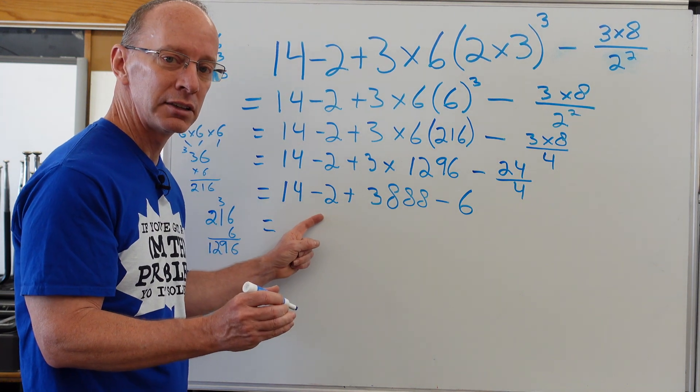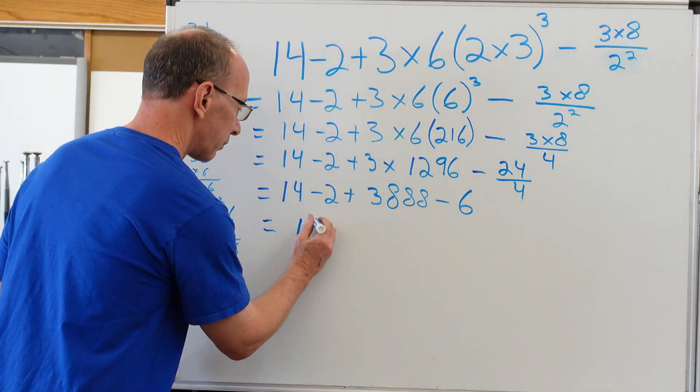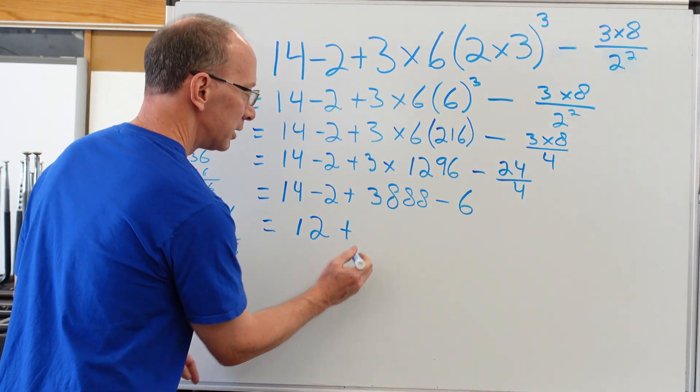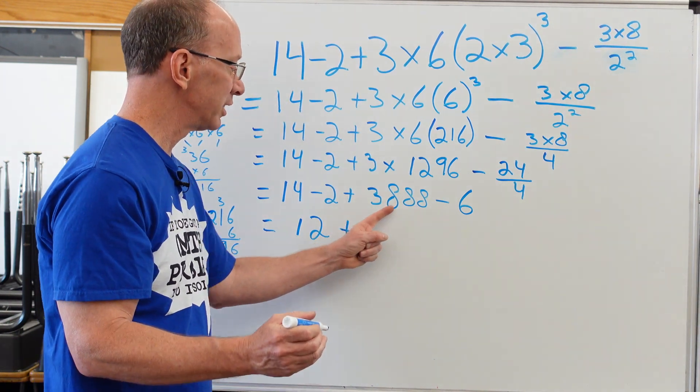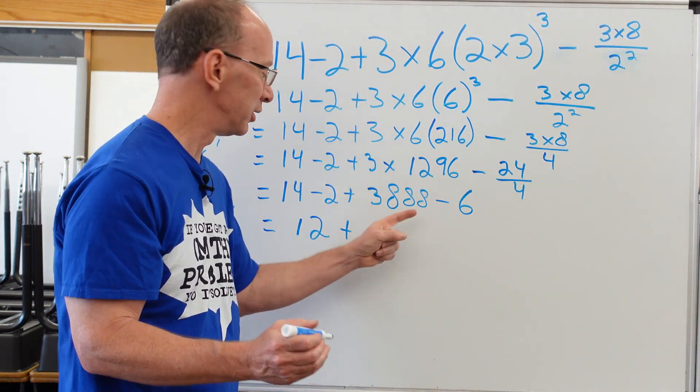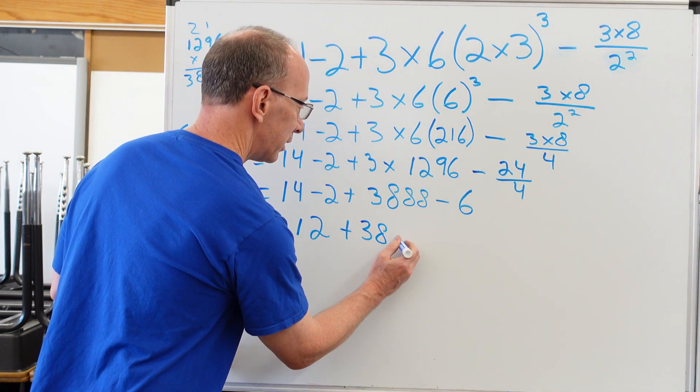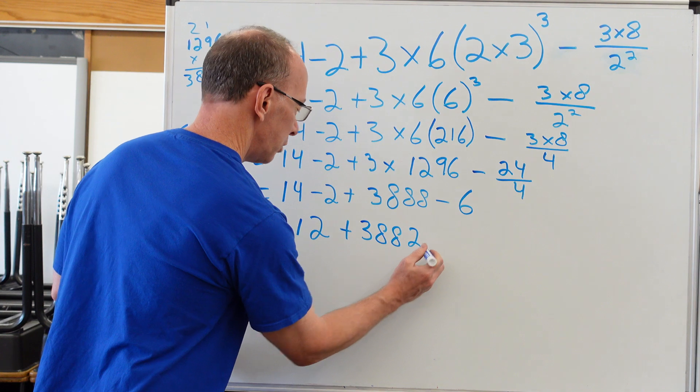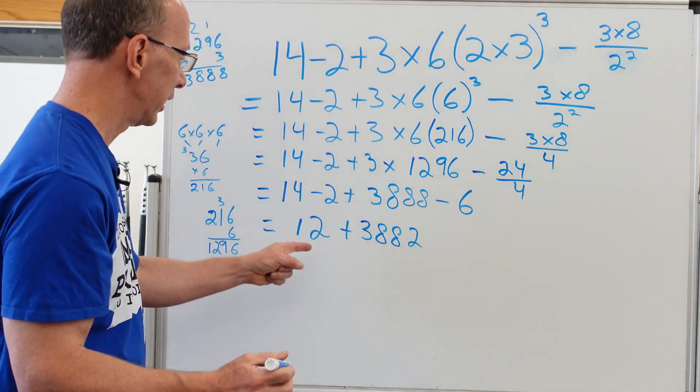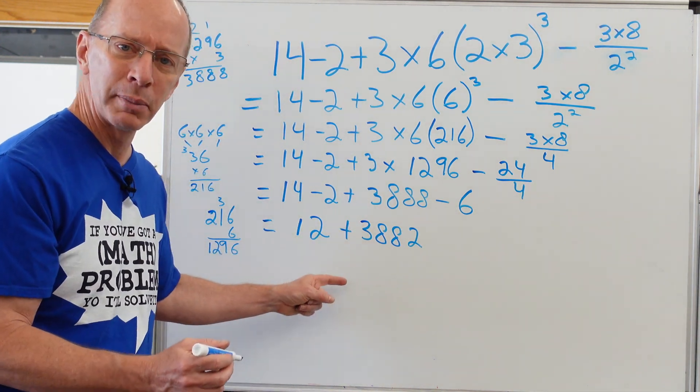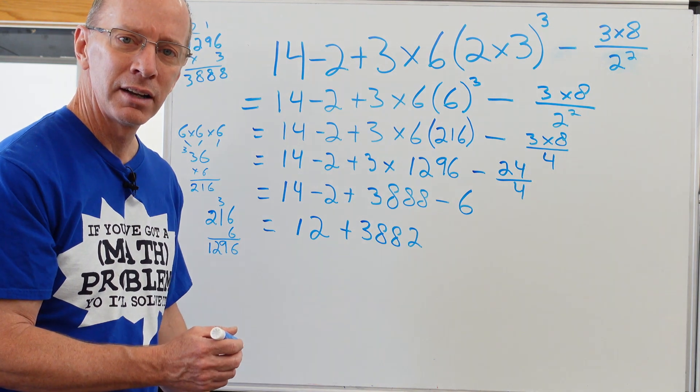14 minus two is 12 plus 3,888 minus six. So I'm going to go ahead and do that one right here. So that would be 3,882. Now I'm going to go ahead and add that. Can you do a little mental math on that? See if you can figure that out. Yeah. All right. Let's see if you got it right.